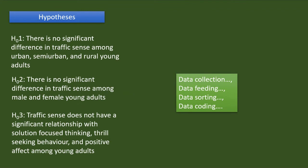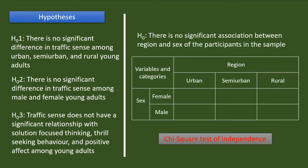Then I went for data collection. After collecting the data, I fed it into an Excel sheet, sorted it, and coded wherever necessary. Female and male were coded as 1 and 2 respectively. Urban, semi-urban, and rural were coded as 1, 2, and 3 respectively. Then I checked if there is an association between the categorical variables region and sex by doing a chi-square test of independence.